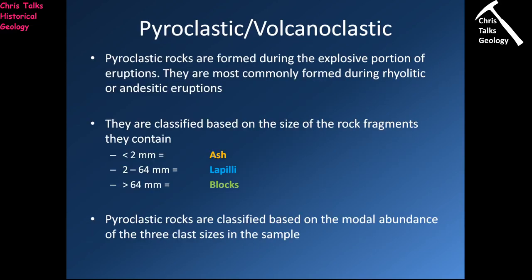The other type of extrusive igneous rock are the pyroclastic or volcanoclastic igneous rocks, produced during explosive eruptions. These rocks consist of a large quantity of clasts — fragments of both rock and pieces of magma that are thrown into the air. During the explosion, you have lots of rock and dust going flying into the air, but also lots of little blobs of magma thrown up as well.